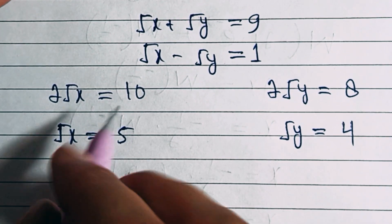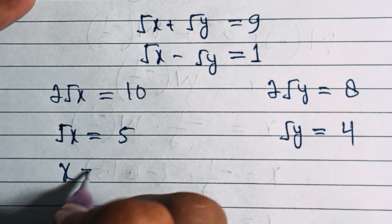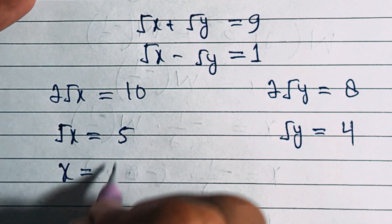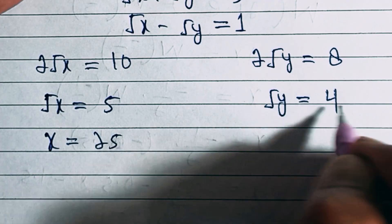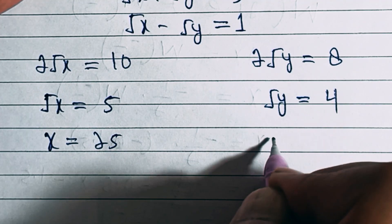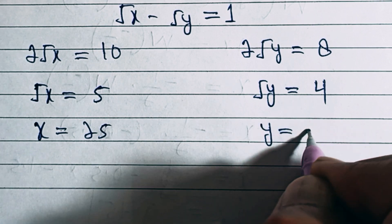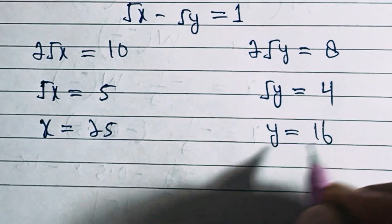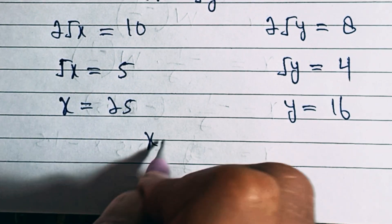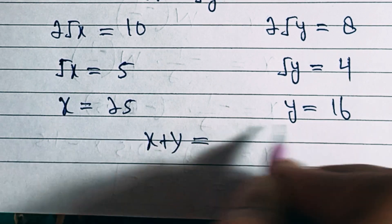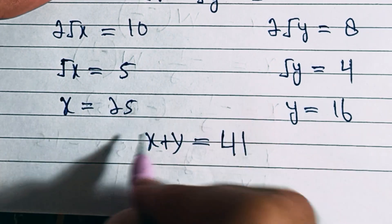Squaring both sides we get x = 5² = 25, and similarly squaring the other we get y = 4² = 16. So x + y = 25 + 16 = 41.